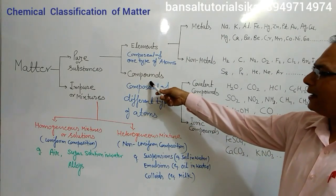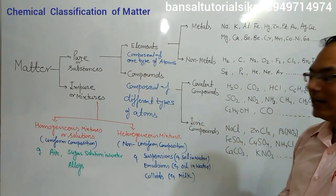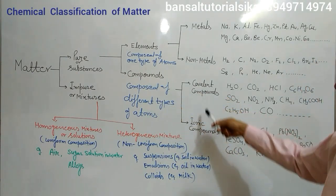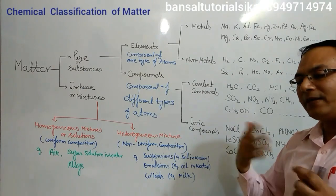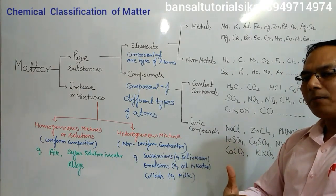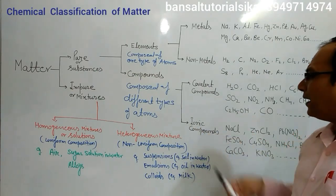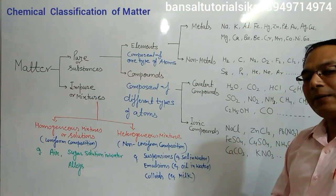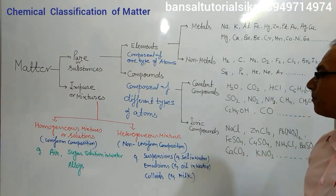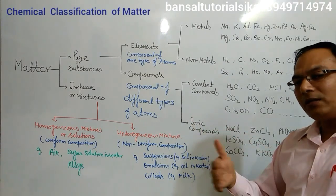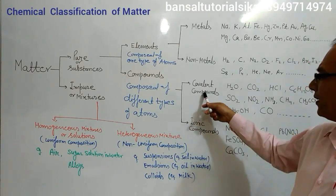Now, coming to the second part of pure matter — compounds — which are composed of different types of atoms. Compounds are divided into two categories: covalent compounds and ionic compounds. When different atoms combine by sharing of electrons, the compounds formed are called covalent compounds. When different atoms combine by transferring of electrons, the compounds formed are called ionic compounds. The properties of these compounds we will discuss in later chapters.